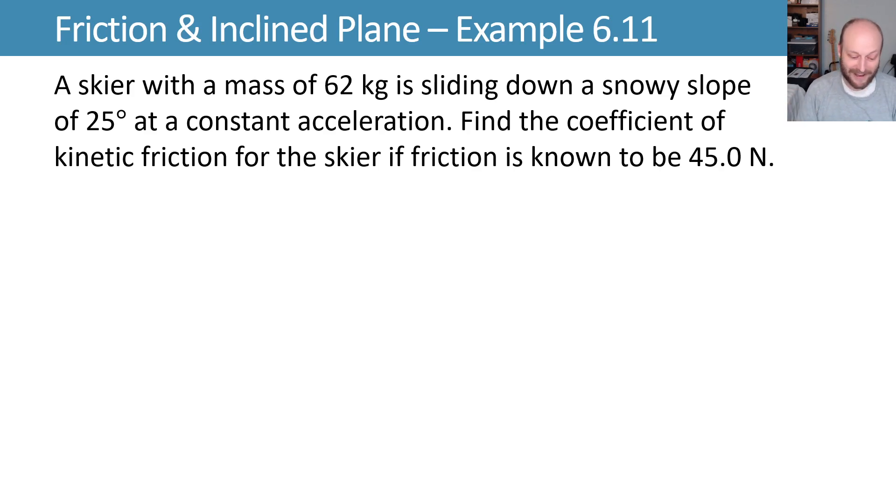Friction problems, can't get enough of them! So here we have a skier with a certain mass. As I read this, I'm going to go ahead and draw a little diagram because we're going down a snowy slope at a 25 degree angle. I'm going to draw my little slope here with a 25 degree angle. I'm going to put my skier on the slope on the lovely skis, and we'll set the mass of this skier equal to 62 kilograms.